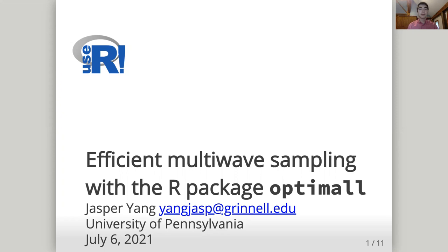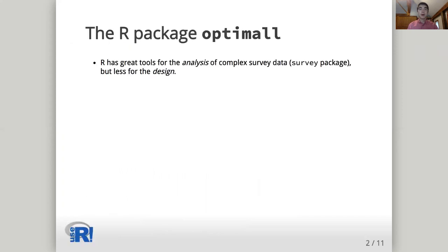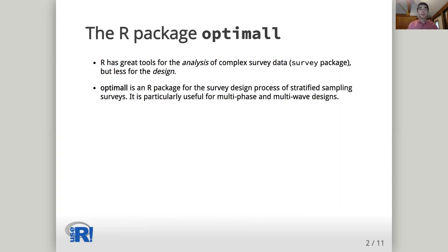Hi, my name is Jasper Yang, and today I'm excited to talk about efficient multi-wave sampling in R with the OptiMall R package. R has a number of great tools for the analysis of survey data, including Thomas Lumley's survey package, but less tools are available for the design and implementation of surveys. OptiMall is an R package for the survey design process of stratified sampling surveys. It is particularly useful for multi-phase and multi-wave designs.